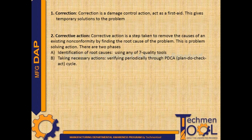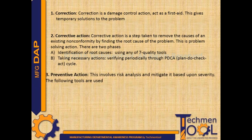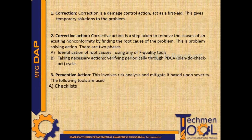There are two phases for corrective action: identification of root causes using any of the seven quality tools, and taking necessary actions while verifying periodically through the PDCA cycle — Plan, Do, Check, Act cycle.